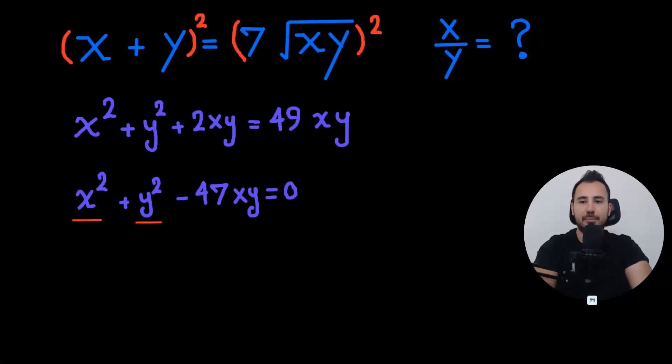So this is the tricky part. Let's divide all terms by xy. Well, to do that, we need to check something.